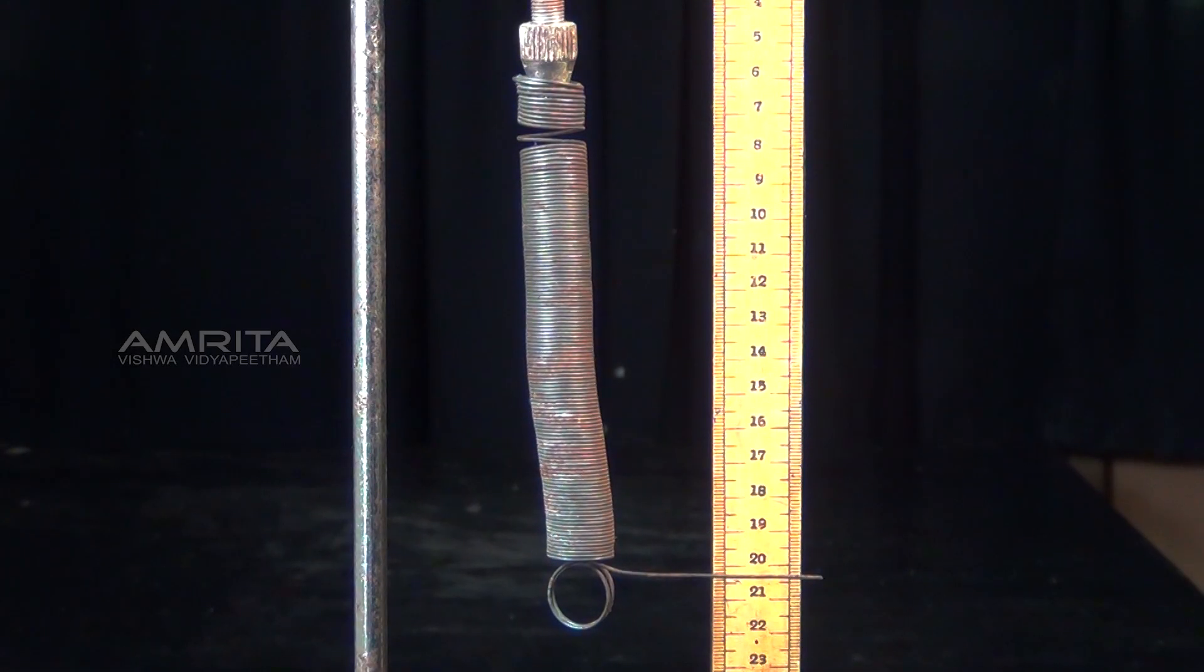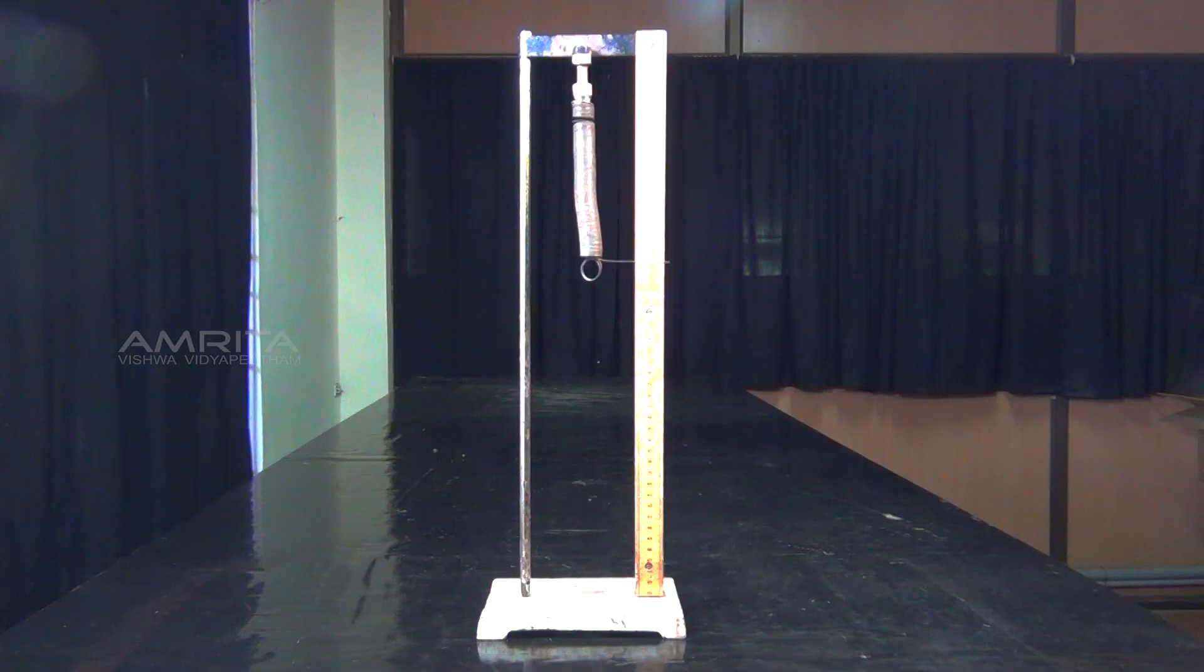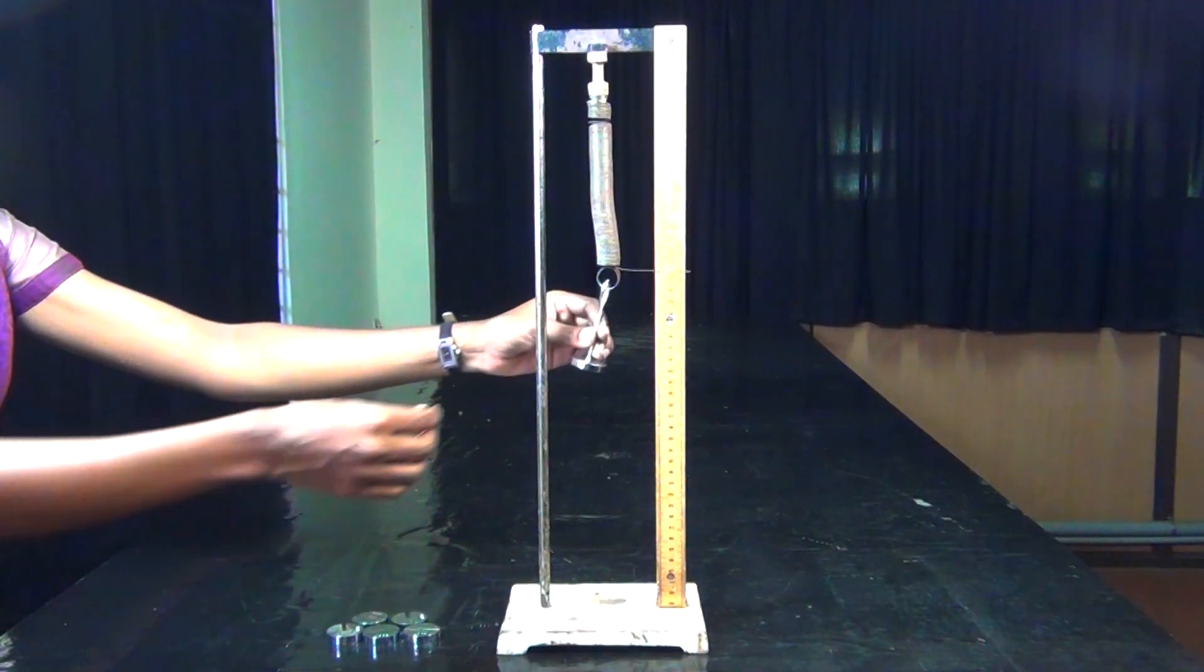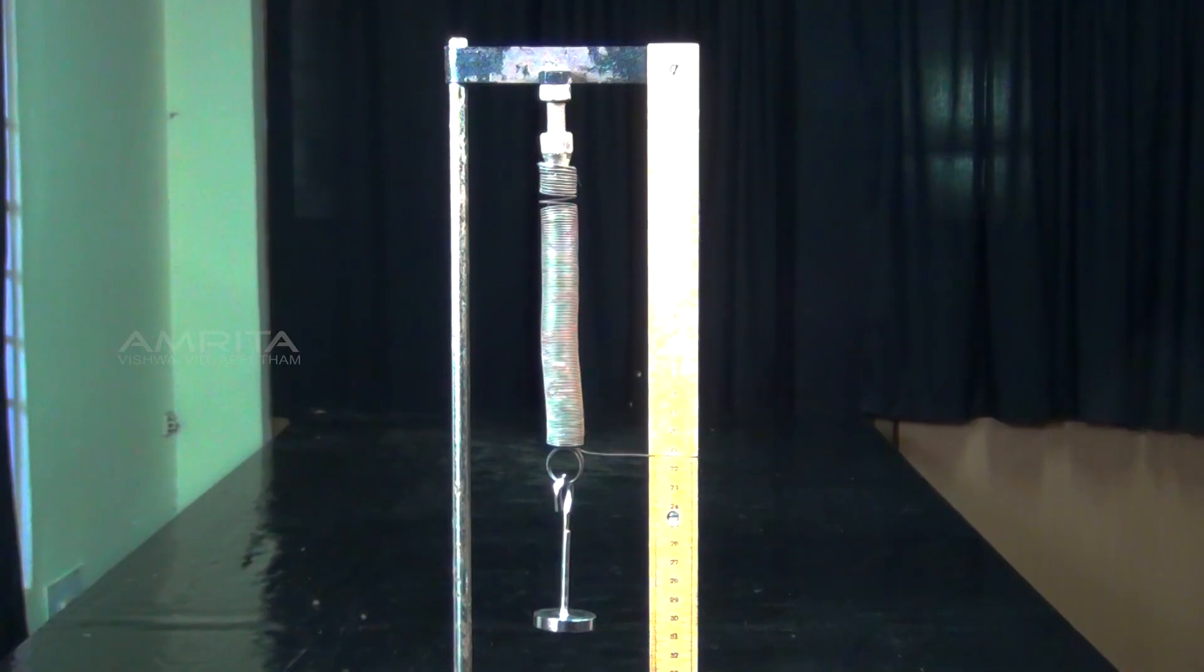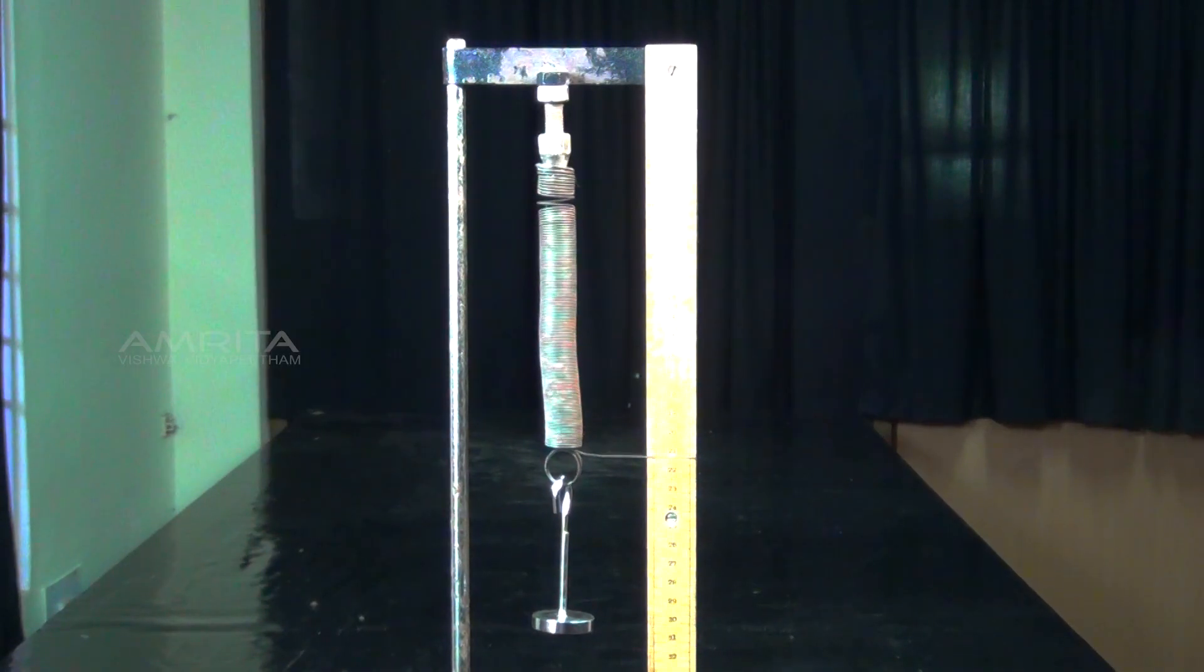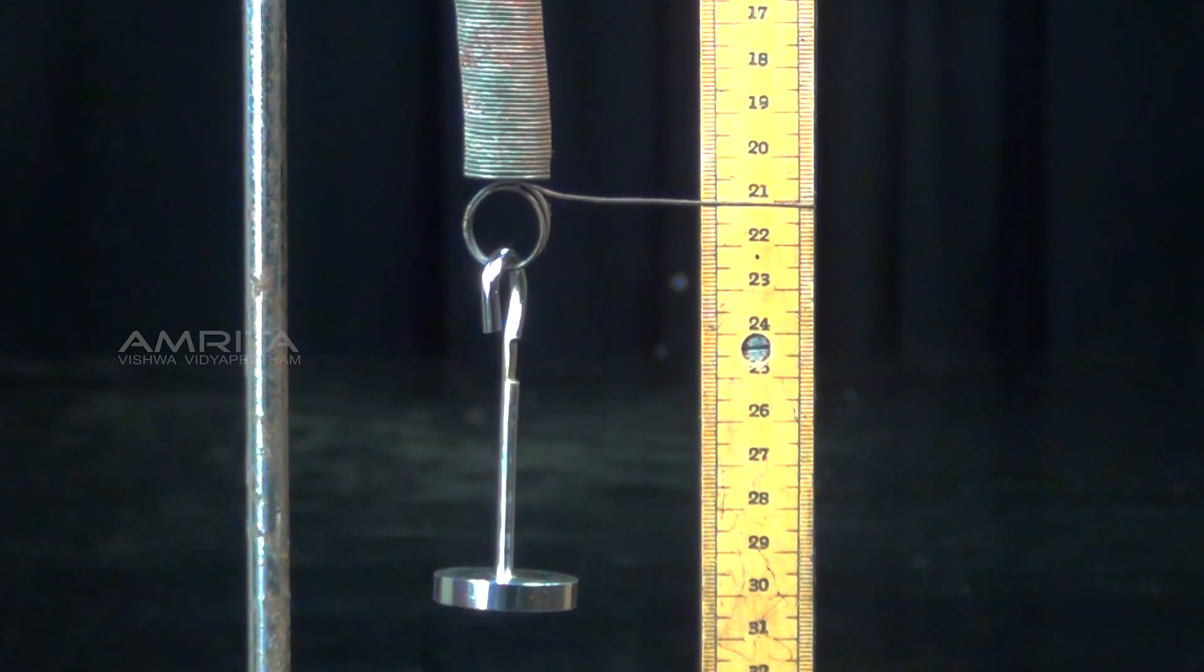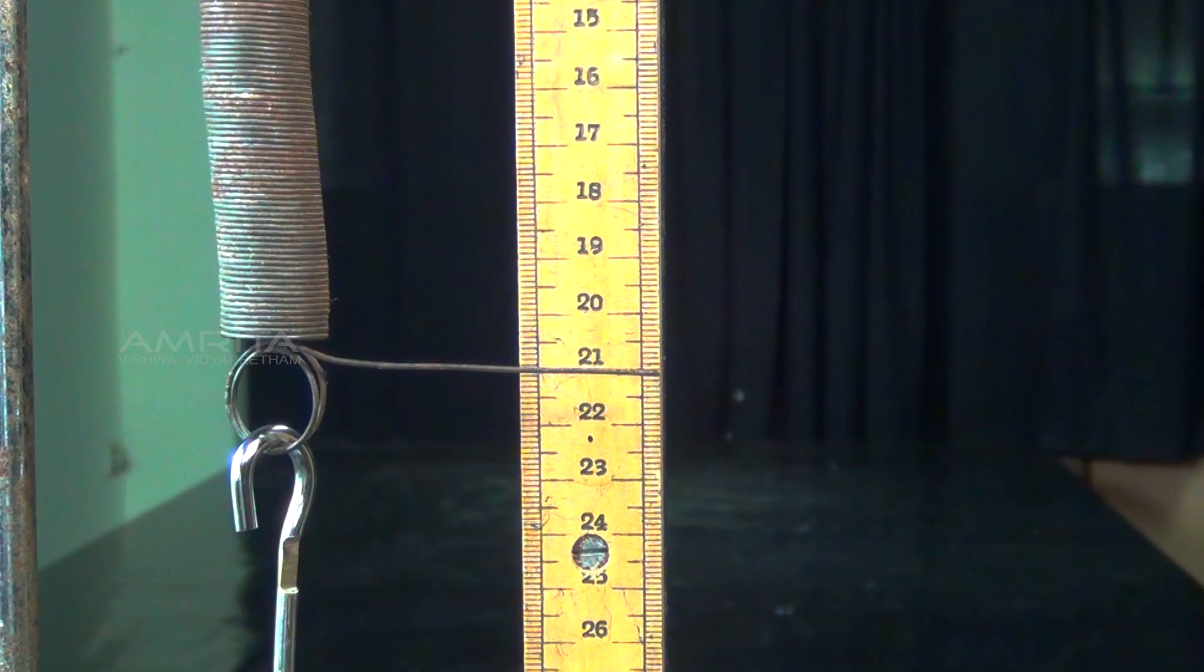The spring with fine pointer is suspended from a rigid support. Attach a weight hanger for 50 g slotted weights from its lower end which will act as dead load. Set the vertical wooden scale such that the tip of the pointer comes to the divisions on the scale but does not touch the scale.